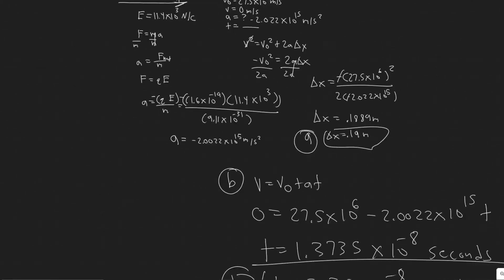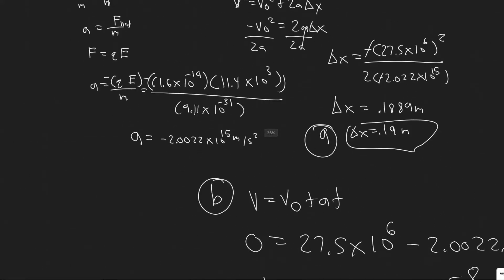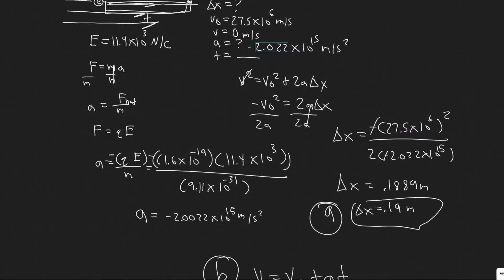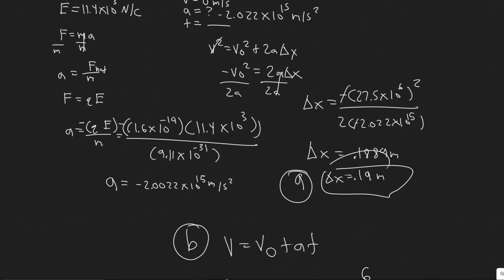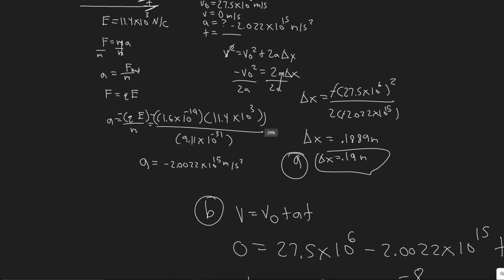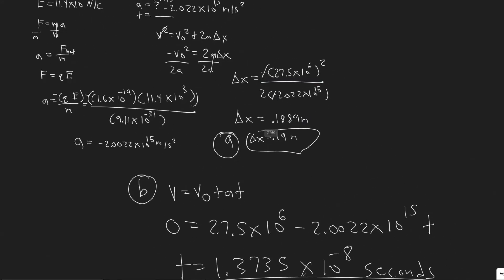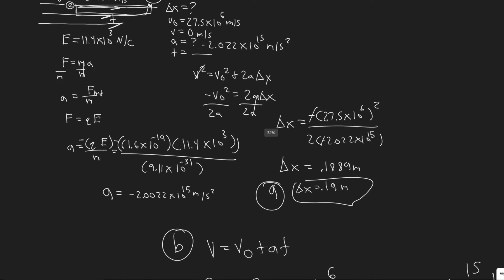I just realized I made an error in this video, but the answers are still correct. I wrote the acceleration value, but when I did the calculation I did not include all the zeros — the correct value has two zeros. Just keep in mind these answers are still correct; I simply omitted an extra zero. Make sure you write in the correct value with two zeros. Sorry about that.